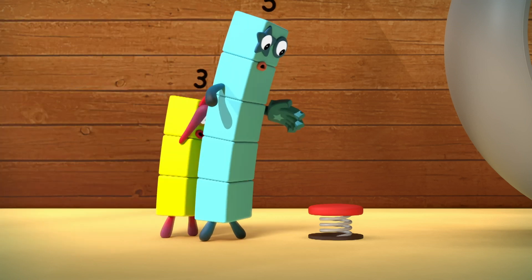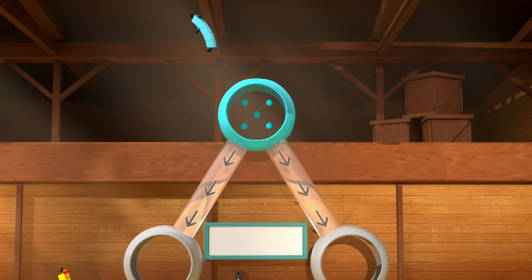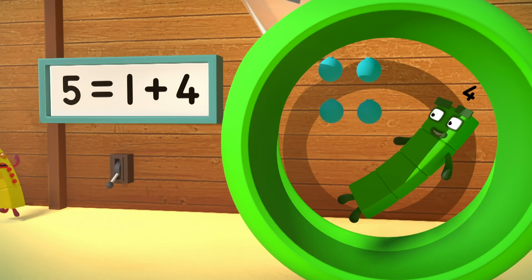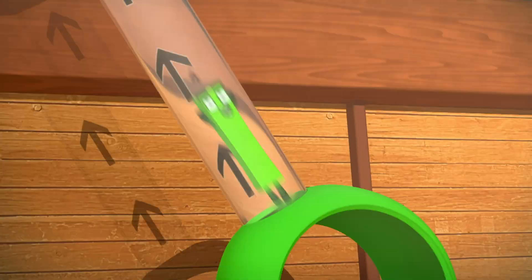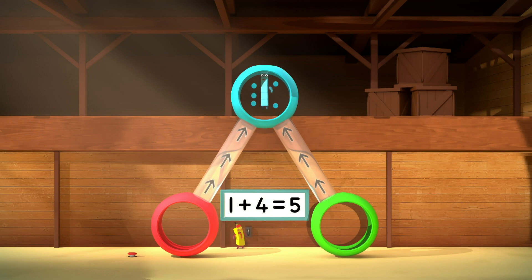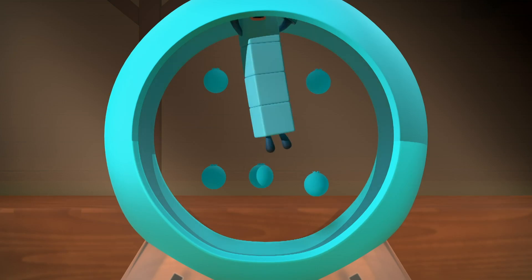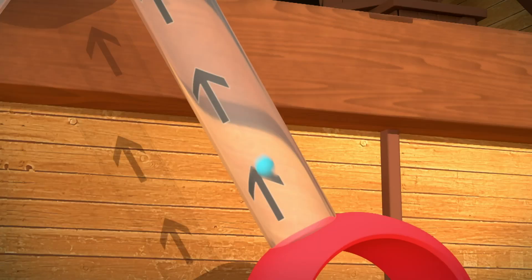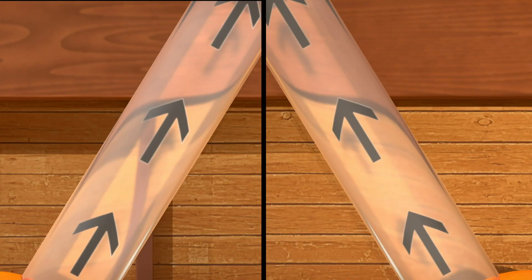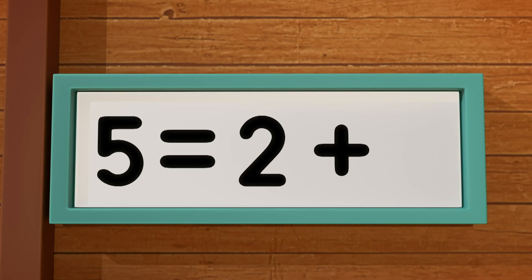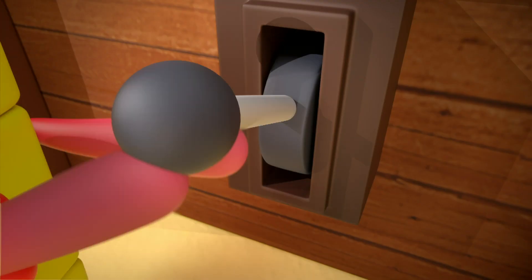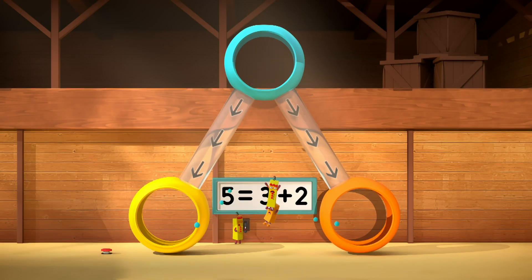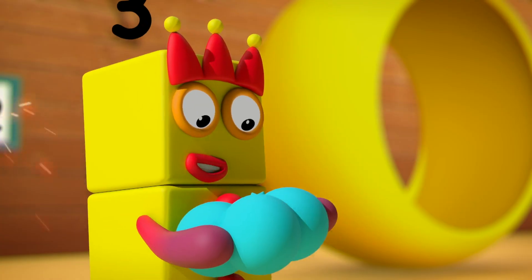I want fruit. Five equals four plus one. Four plus one equals five. Five equals two plus three. Two plus three equals five.